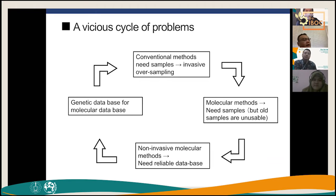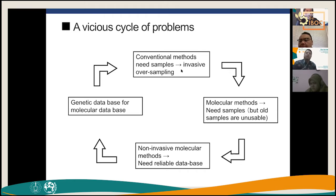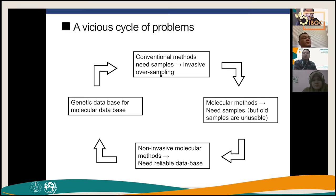To summarize the circular problem: conventional methods are invasive and may remove organisms from the gene pool. Molecular methods need fresh samples; museum samples are often unusable. Non-invasive methods like barcoding and eDNA need a reliable database, which doesn't exist yet. To build that database, you need to collect more samples. So we keep going around and around, killing animals in the name of research.